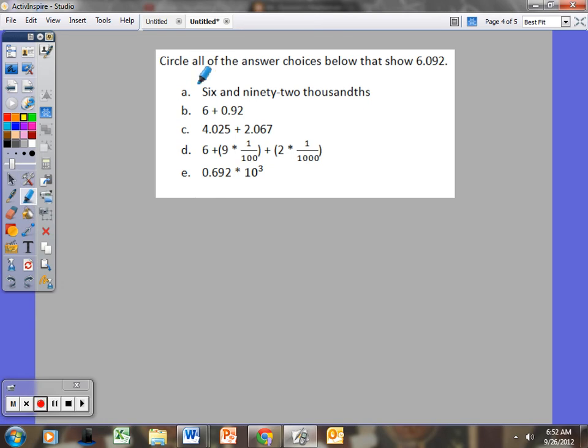I'm going to grab my highlighter here. It says circle all of the answer choices below that show 6.092. Now many of us say 6.092, I'm going to try to break us of that habit. I see that the 2, let's see, tenths, hundredths, thousandths, so it's 6 and 92 thousandths. So circle all the answer choices below that show 6 and 92 thousandths. The key word here is all. To me, that tells me there's probably more than one answer, and I have to find the ones that show or equal 6 and 92 thousandths.